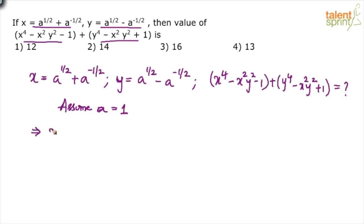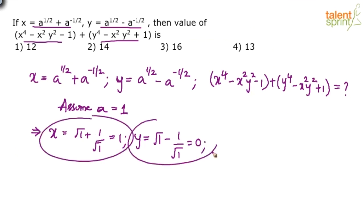What will be the value of x? x will be equal to 1 power 1/2 plus 1 power minus 1/2, which is like root 1 plus 1 by root 1, because a power minus 1/2 is 1 by a power 1/2. So 1 by root 1, which is overall... How about y? y will be equal to root 1 minus 1 by root 1, which is equal to 0. So we know that x is equal to... and y is equal to 0. Substitute both these values in the expression here.